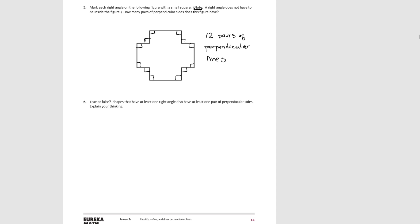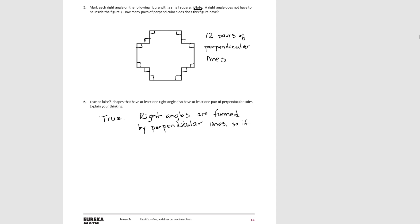Pause the video and try number six. That statement would be true because right angles are formed by perpendicular lines. So if a shape has a right angle, it must also have at least one pair of perpendicular lines.